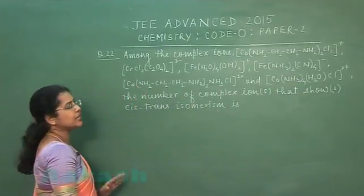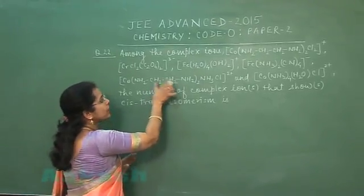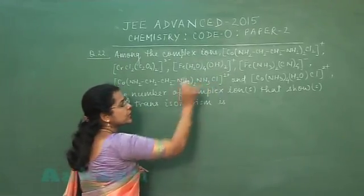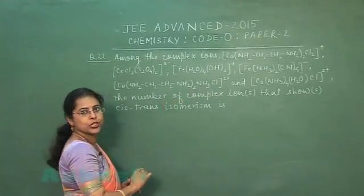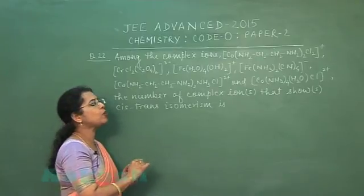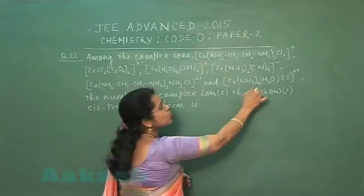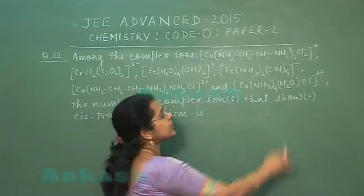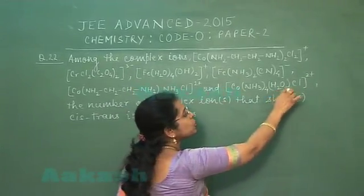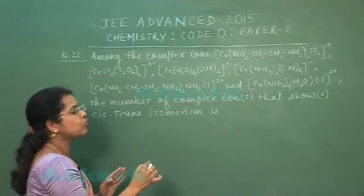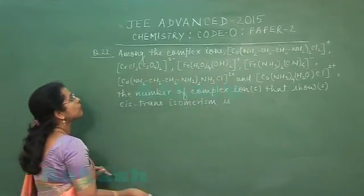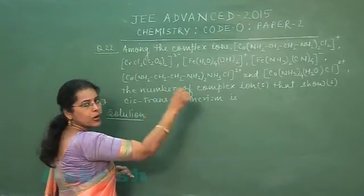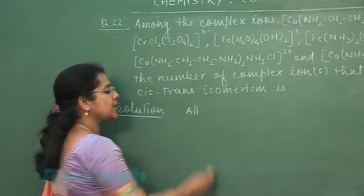The fifth complex ion has two ethylenediamine ligands, one ammonia, and one chlorine. These two different ligands may differ in their position with respect to each other, forming cis-isomer or trans-isomer. The sixth complex ion has four ammonia molecules and two different ligands — H₂O and Cl — which may also form cis and trans-isomers. According to the formulas given, all six complex ions can exhibit geometrical isomerism.